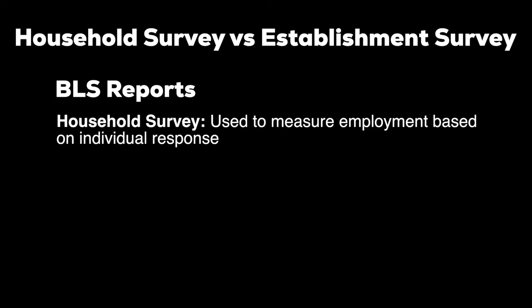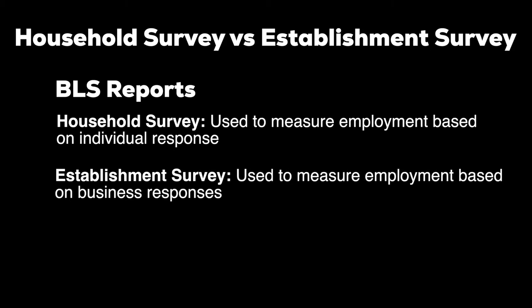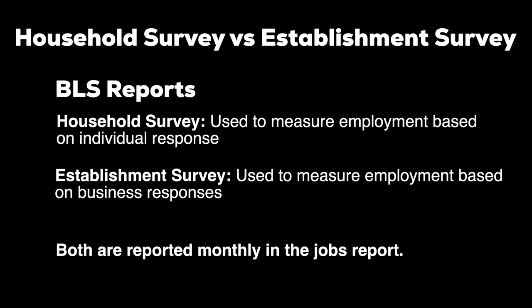So far, we have mainly talked about data that can be found in the Household Survey. There are actually two surveys that the BLS uses to report labor market data. Today, we'll talk about the Household Survey and the Establishment Survey. The Household Survey is part of the Current Population Survey administered by the BLS every month — this is where the BLS reports unemployment and labor force participation numbers. The Establishment Survey is used as a measure of labor market strength, reporting how many new jobs were created and the average hourly rate. A complete picture of the labor market takes both into consideration.